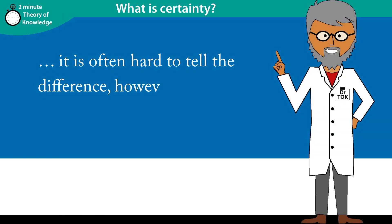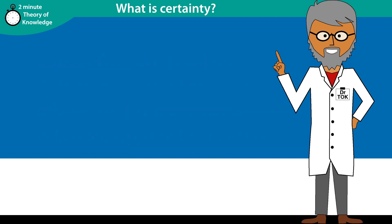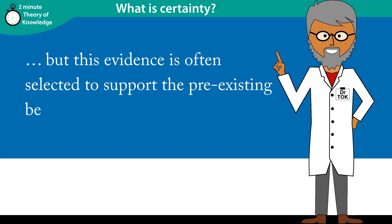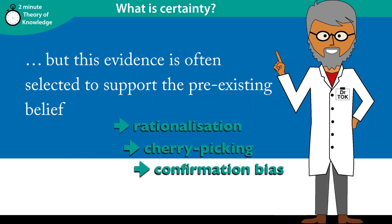It is often hard to tell the difference, however, because it often seems like our irrational beliefs are supported by evidence. But this evidence is often selected to support the pre-existing belief, known as rationalisation, cherry-picking, or confirmation bias.